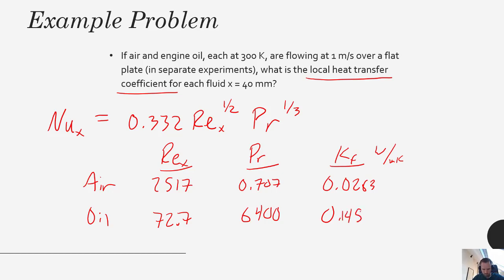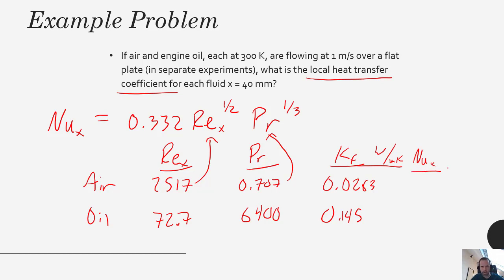We plug in these numbers — Reynolds number here, Prandtl number here — and we get the Nusselt number for each situation. At x equals 40 millimeters, the Nusselt number for air is 14.84, and for oil it is 52.57.